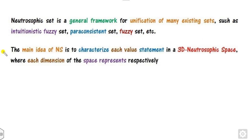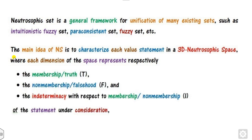The main idea behind the Neutrosophic set is to characterize each value statement in the 3D Neutrosophic space. In this Neutrosophic space, each dimension is represented by three degrees: the first is truth membership, the second is non-membership (also called falsity), and the third is indeterminacy with respect to this membership and non-membership.